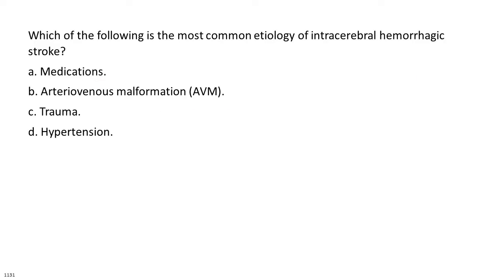Which of the following is the most common etiology of intracerebral hemorrhagic stroke? A. Medications. B. Arteriovenous malformation, AVM. C. Trauma. D. Hypertension.